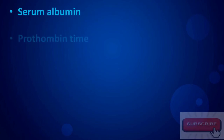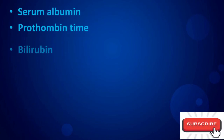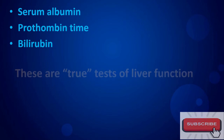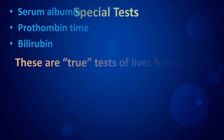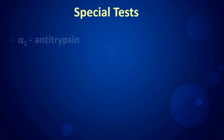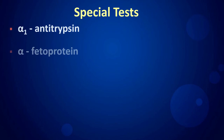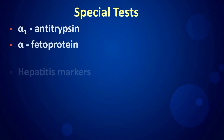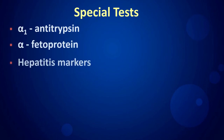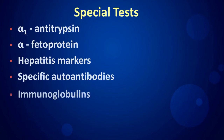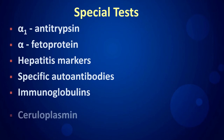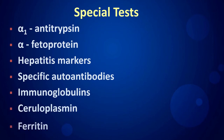Serum albumin, prothrombin time, and bilirubin are considered the true tests of liver function. Special tests include alpha-1 antitrypsin, alpha-fetoprotein, hepatitis markers, specific auto-antibodies, immunoglobulins, ceruloplasmin, and ferritin.